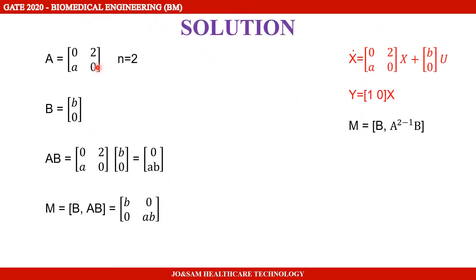First, we restate the given system: x-dot equals [0, 2; A, 0] into x plus [B; 0] into u, and y equals [1, 0] into x. Now let's compare this to the standard state space model.